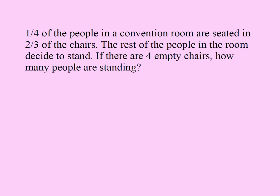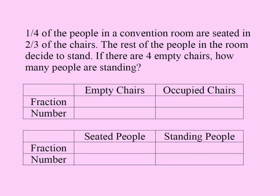We're going to solve this problem by filling out a table. I have two scenarios: one involves chairs — they're either empty or occupied — and the other involves people — they're either seated or standing. For each, I have a fraction scenario and a number scenario. A fraction means something like one-third of the chairs are empty; a number would mean five chairs are empty.